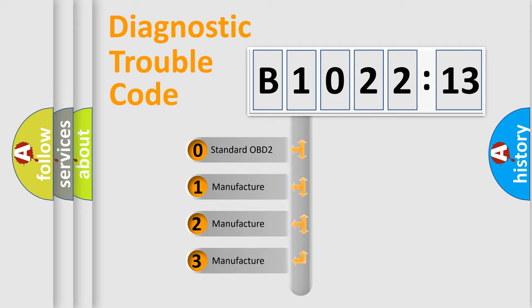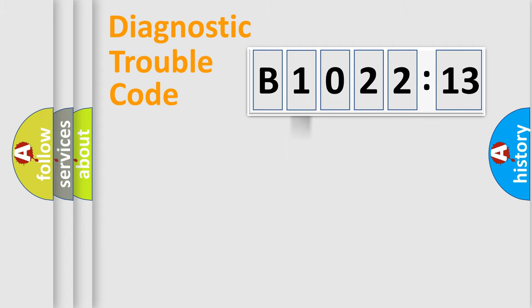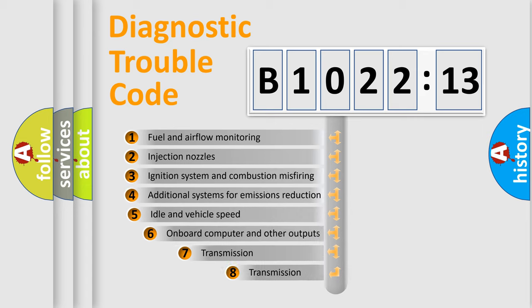If the second character is expressed as zero, it is a standardized error. In the case of numbers 1, 2, or 3, it is a manufacturer-specific expression of the car-specific error.